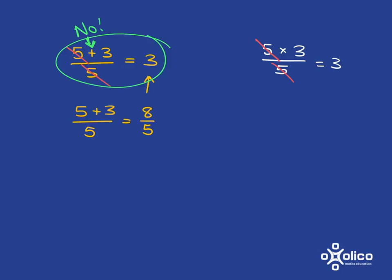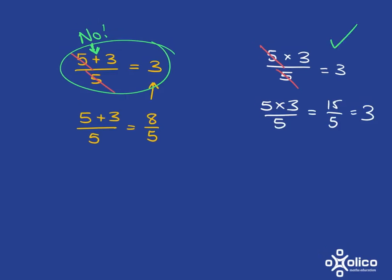This one, on the other hand, is no problem whatsoever. 5 times 3 over 5, if you worked it out, it's 15 over 5, which is equal to 3. So this is going to get a big tick. You can do that. And the important thing to note is that you've got a multiplication sign.